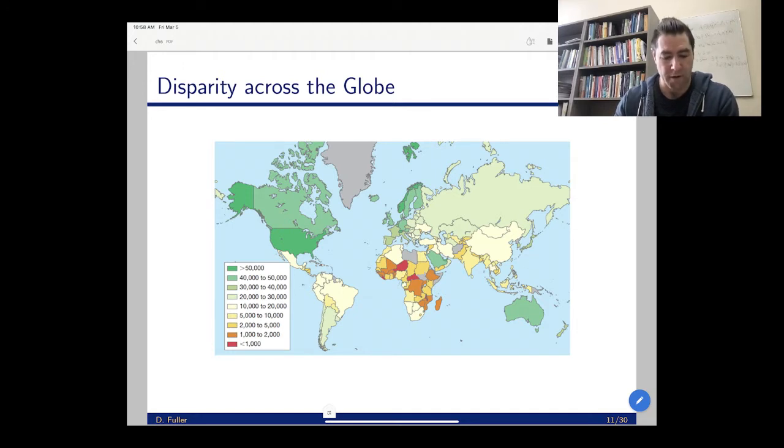Before I go into the next part, this graph gives you an idea of how much variation there is in the world in terms of standards of living or incomes per person. This is per capita income per person - the darker green, the richer the country is, and the darker red, the poorer the country is, with white being somewhere in between. When you look at the variation in colors here on the graph, you can see there's a lot of disparity in standards of living across the world.